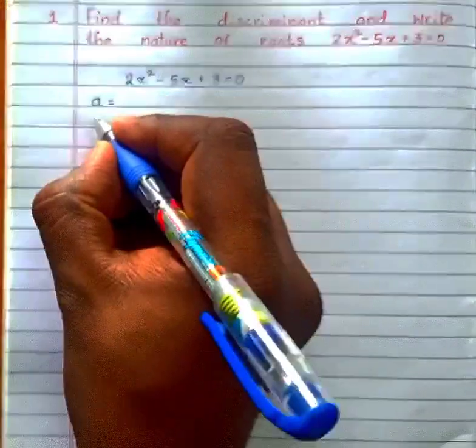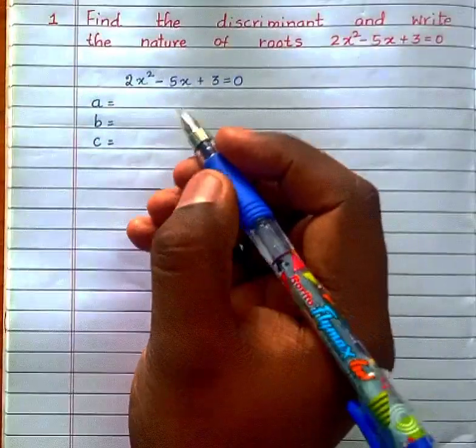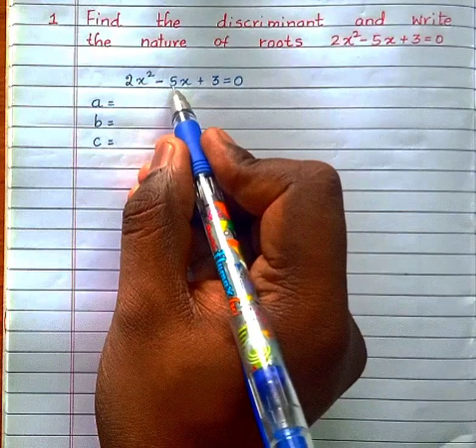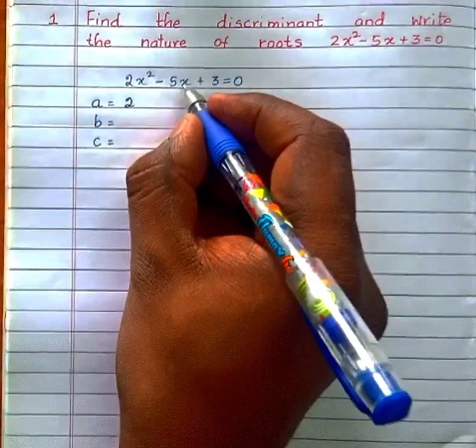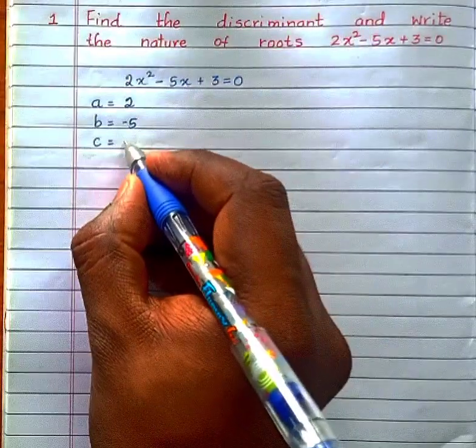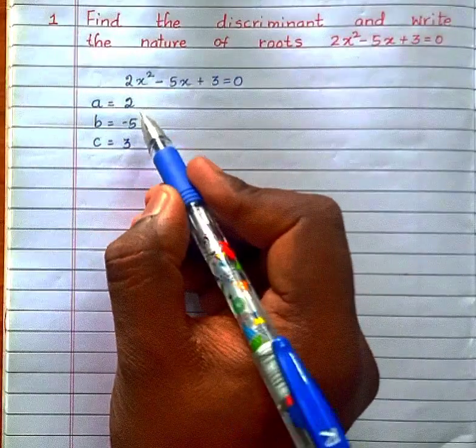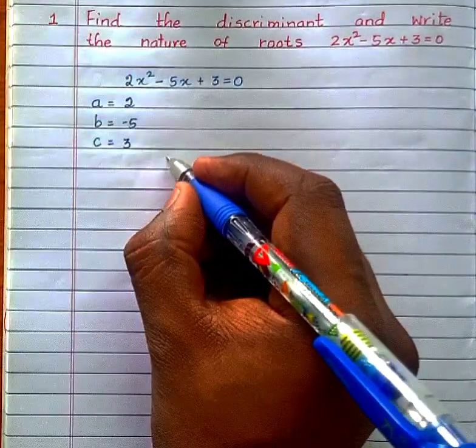The first step is find out the value of coefficients a, b and c. What is the value of a? Coefficient of x². b is coefficient of x and c is the constant. So a = 2, b = -5, c = 3.